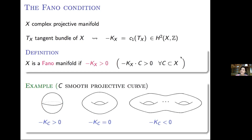For instance, when C has complex dimension one — so it is a smooth projective curve, a Riemann surface — the anticanonical class measures roughly the genus of the Riemann surface. The Fano condition of positive anticanonical class corresponds precisely to the case when the genus is zero, or in other words when we are over the complex projective line.